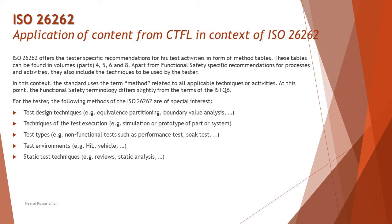What is a method table? We will understand that in a short while. These tables can be found in volumes 4, 5, 6, and 8 of ISO 26262. They contain functional safety-specific recommendations for processes and activities, and also include the techniques to be used by the tester — so it's not just limited to recommended techniques but also many other things.